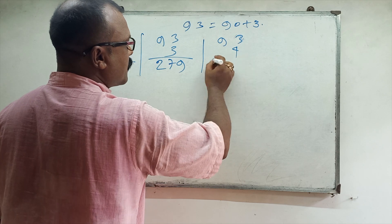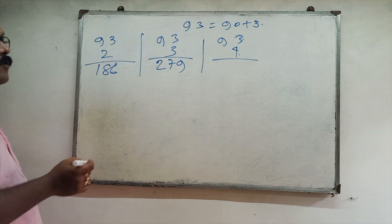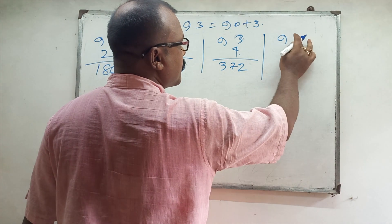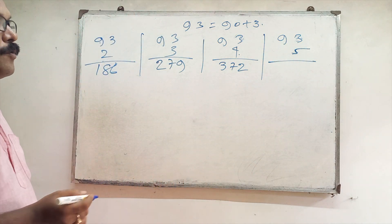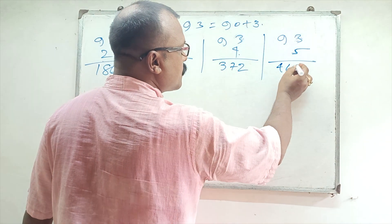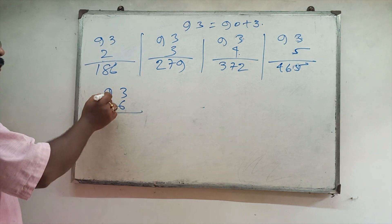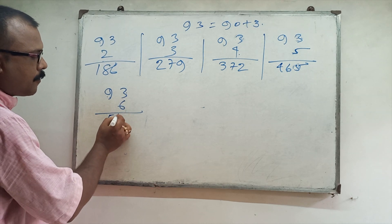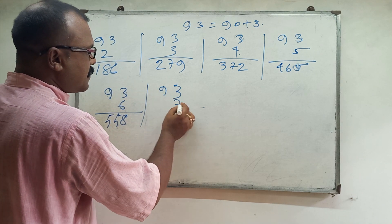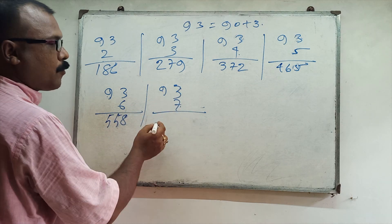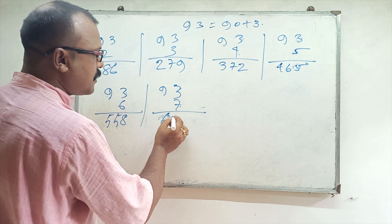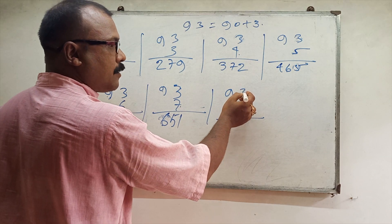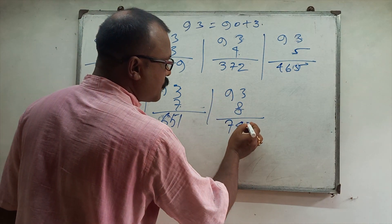93 fours: 9 fours are 36, 360 plus 12, that is 372. 93 fives: 9 fives are 45, 450 plus 15, so 465. 93 sixes: 9 sixes are 54, 540 plus 18, so 558. 93 sevens: 9 sevens are 63, 630 plus 21, so 651. 93 eights: 9 eights are 72, 720 plus 24, so 744.